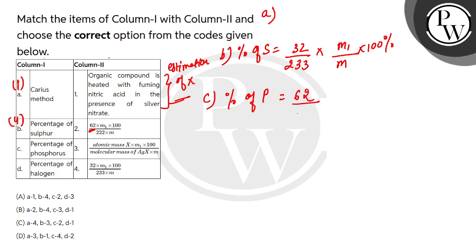So 62 divided by 222. 222 is the molar mass of Mg2P2O7. M1 is the mass of the Mg2P2O7 divided by mass of the organic compound multiplied by 100%. So C comes out to be second.